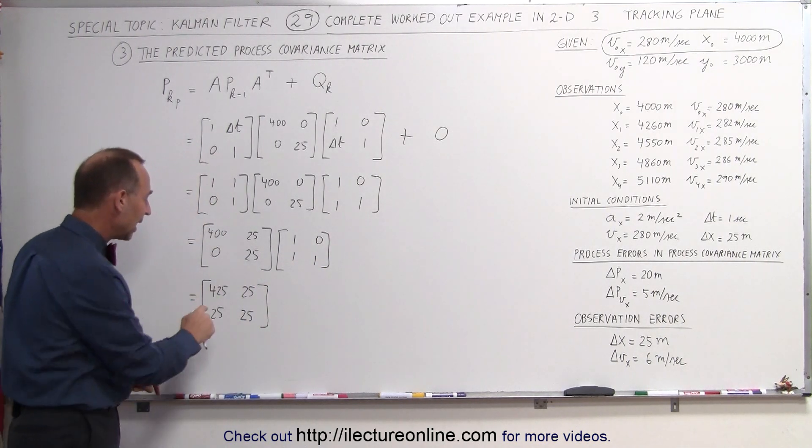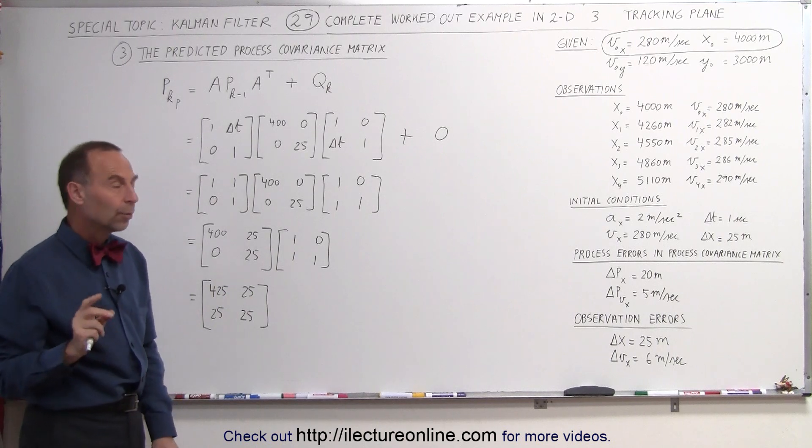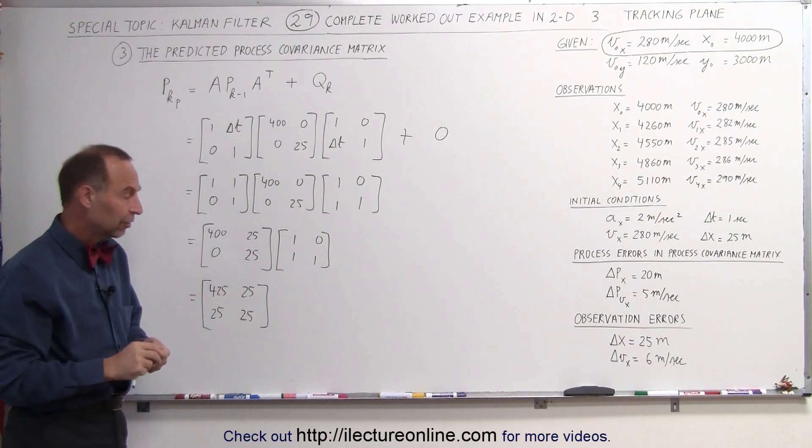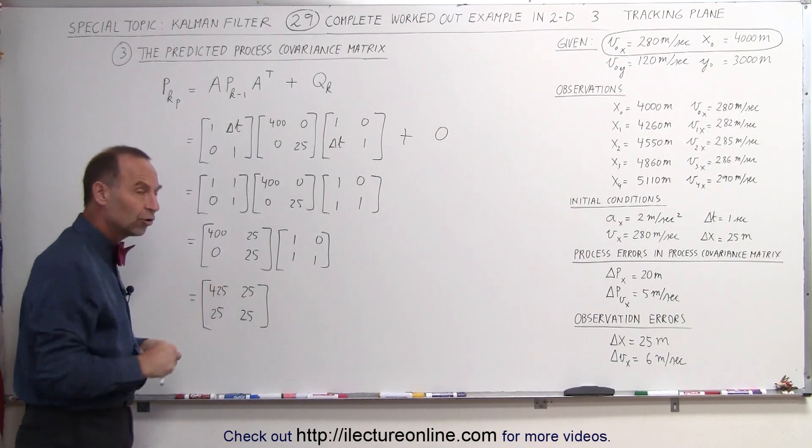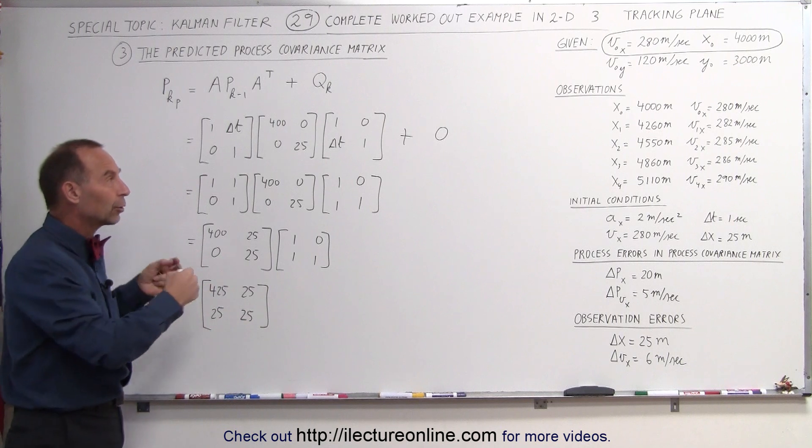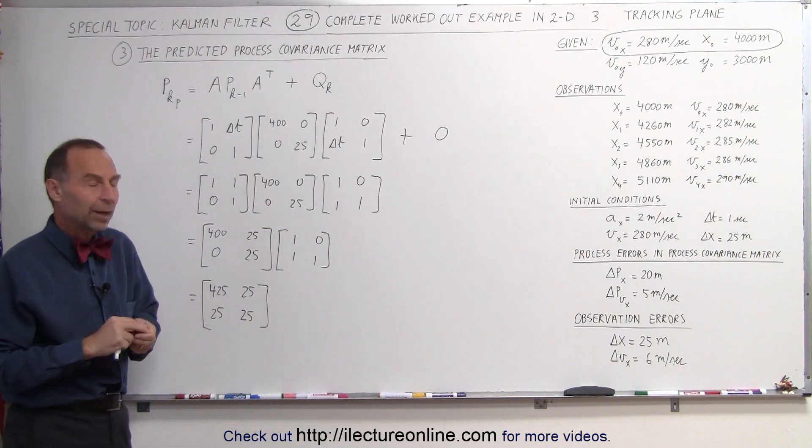Okay, now notice that we have those cross terms again. Remember in the previous video, we had 100 here and 100 there as a cross term. This would have changed those terms a little bit, but since we didn't include it in the previous video, we're not going to include it in this first example right here.